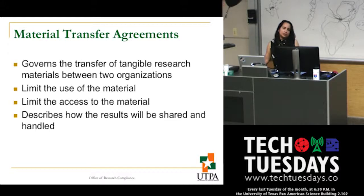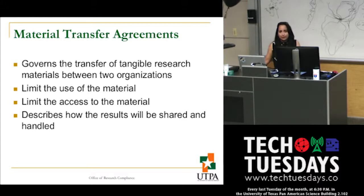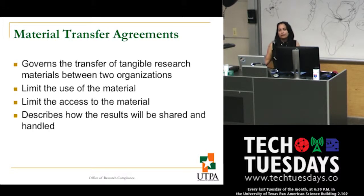What happens if you're a student working on a thesis and you've disclosed an invention that is still being evaluated? The university policy is that we won't prevent you from doing your thesis. We may delay the presentation by requesting a 30-day period to file a provisional patent. As soon as we hear back from the U.S. Patent and Trademark Office, it is safe for you to go ahead and present or defend your thesis. The delay cannot be unreasonably extended.